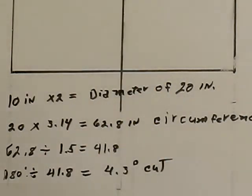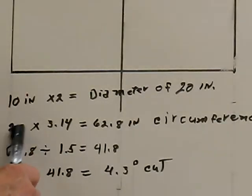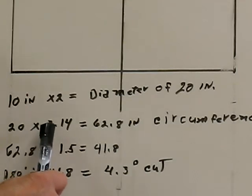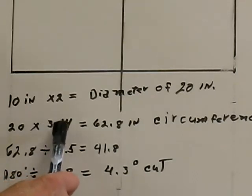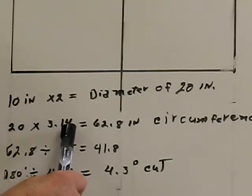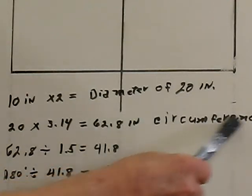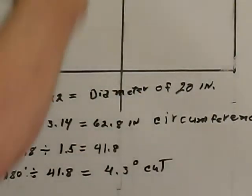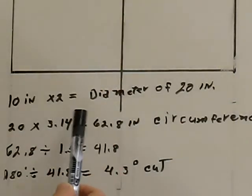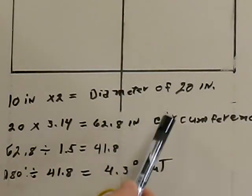Okay, the next thing that we need to do is take the twenty inches times the factor of three point one four and that will give us the circumference of the circle, the complete circle, which is sixty two point eight inches.